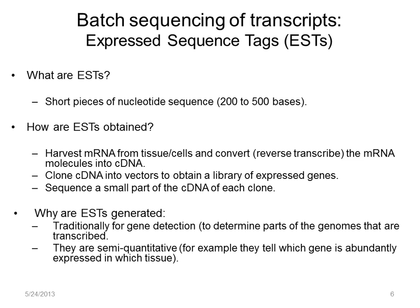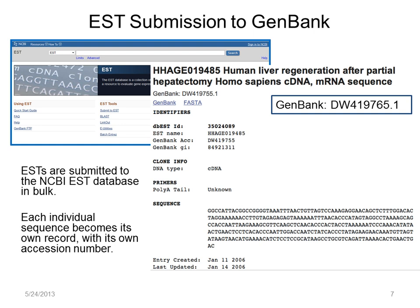For our purposes, just know that ESTs are relatively short sequences, say 200 to 500 bases, and that they often represent only part of a given gene. So if you are a scientist who has generated a large number of EST sequences from liver tissue, you can submit these sequences in bulk to the NCBI EST database. Each sequence gets its own GenBank record, including an accession number, and the record notes the tissue source.